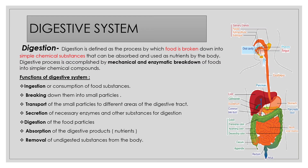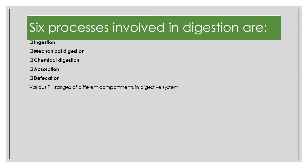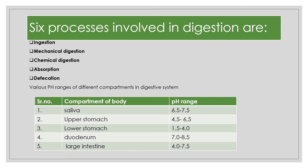Moving to the salivary section: saliva is rich in electrolytes including sodium, potassium, bicarbonate ions, chloride ions, etc. It also possesses various enzymes including amylase and lysozymes. Amylase is responsible for the metabolism of carbohydrates, starch, and maltose, converting them to glucose for easy absorption. Lysozymes play an important role in providing antibacterial properties.